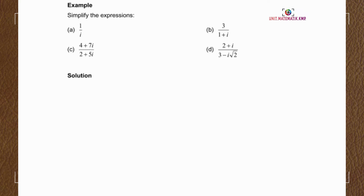Now look at the example. Simplify the expression for Example A: 1 over i. This fraction is not simplified because there is an imaginary part in the denominator. An imaginary part in the numerator is acceptable, but not in the denominator. We need to get rid of the i in the denominator.